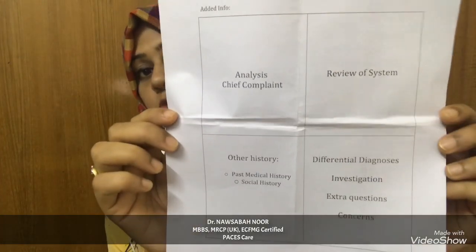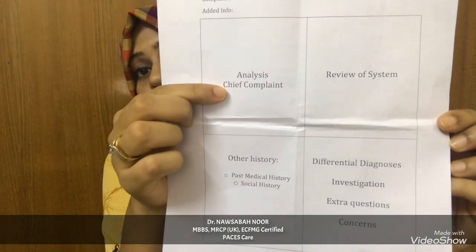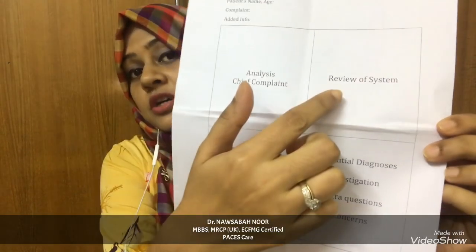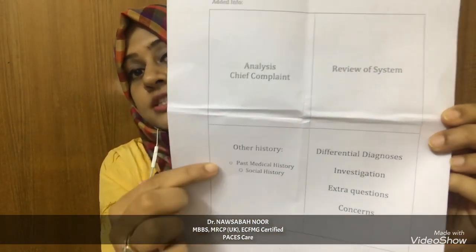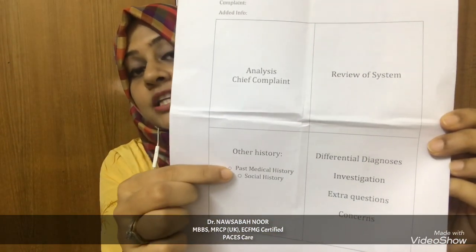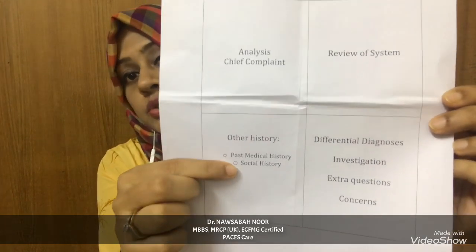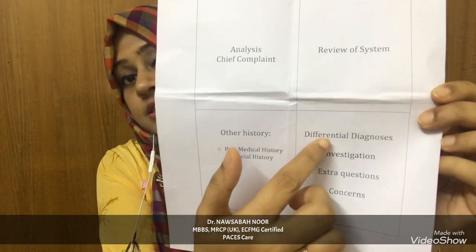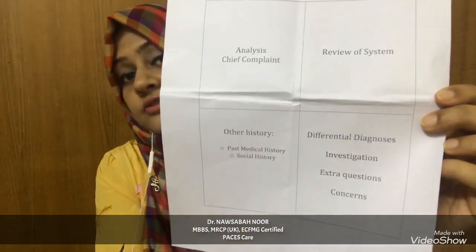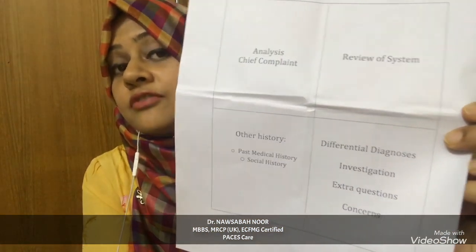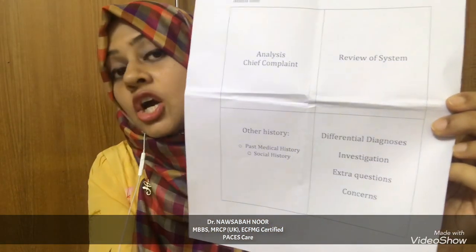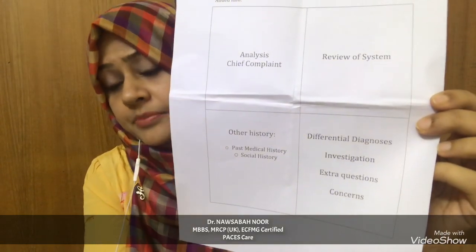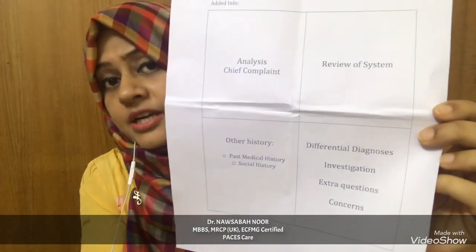On the 4 boxes: the first box is for analysis of the chief complaint, the second box is review of systems, the third box is other history including past medical history and social history, and the last box is differential diagnosis. Considering the chief complaint, you have to make a list of around 5 to 10 differential diagnoses.